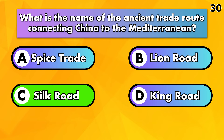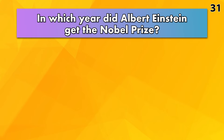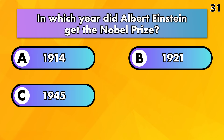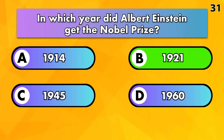In which year did Albert Einstein receive the Nobel Prize? 1914, 1921, 1945 or 1960? It's 1921.